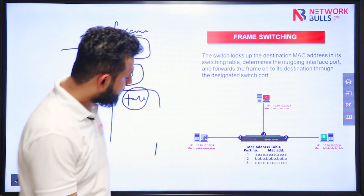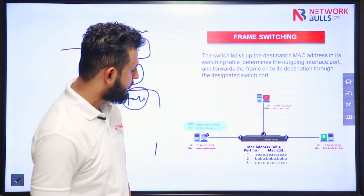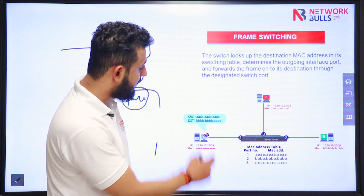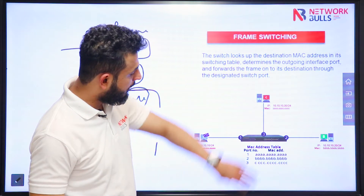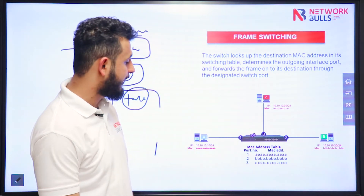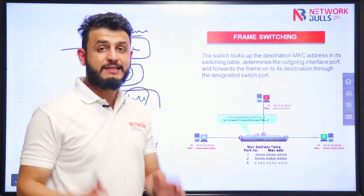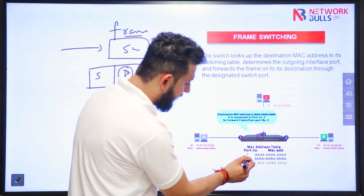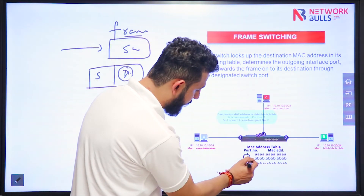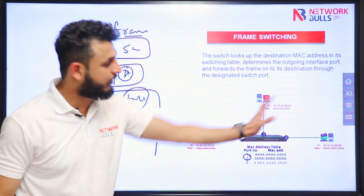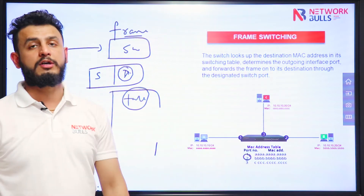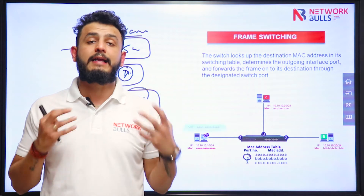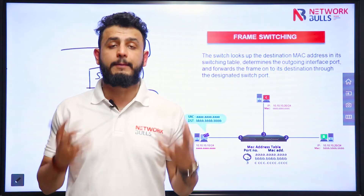Like you can see here, this computer is generating information. Source MAC is A, destination is B. So when the switch will receive that particular frame, switch will check its MAC address table and the switch knows that B is connected to port number 2. So switch will forward the information to port number 2. Frame switching is basically defining how a switch forwards frames.